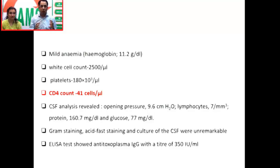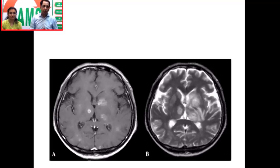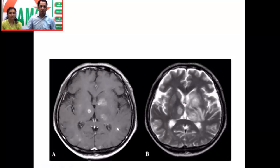With this background, an MRI of the brain was advised — a contrast enhanced MRI along with a routine MRI. We will look at both images. The first image labelled A is a contrast enhanced MRI image, and image B is a T2 weighted MRI image. On the contrast enhanced MRI image, you can see there are multifocal ring enhancing lesions, primarily in the basal ganglia area and some ring enhancing lesions at the corticomedullary junction. On the T2 weighted image, there is extensive surrounding edema around the lesions.